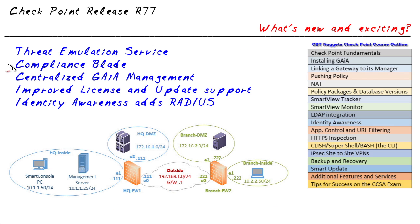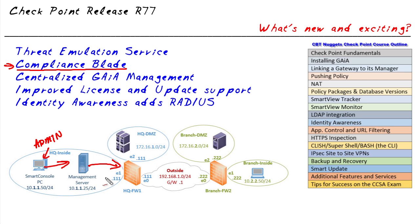Another really cool licensed software blade is the compliance blade. It helps identify potential security breaches and vulnerabilities and provides practical guidelines. For example, if an admin accidentally puts a very lenient rule like 'permit any any' at the top of the rule base and is about to push it out, the compliance blade can flag that as a bad idea. It also assesses the compliance and security posture across Checkpoint software blades and makes recommendations to improve security — even for experienced administrators, it's a helpful reminder of best practices.